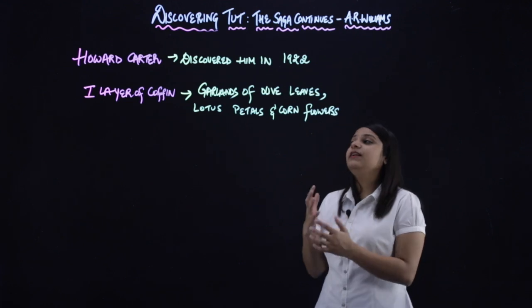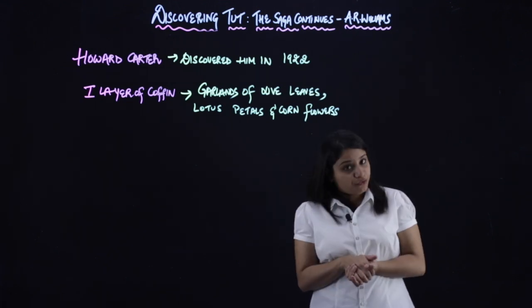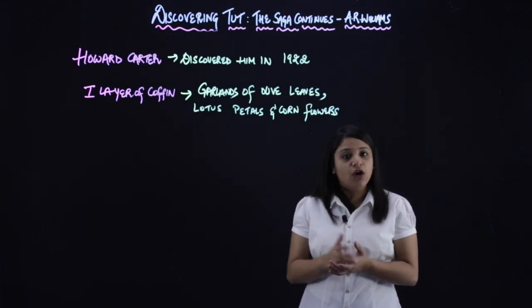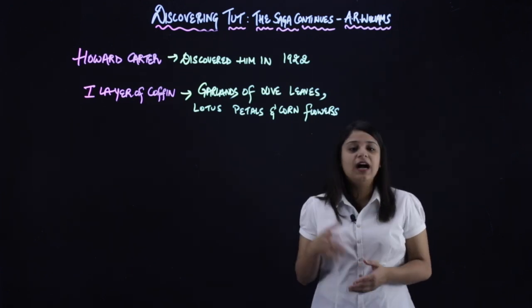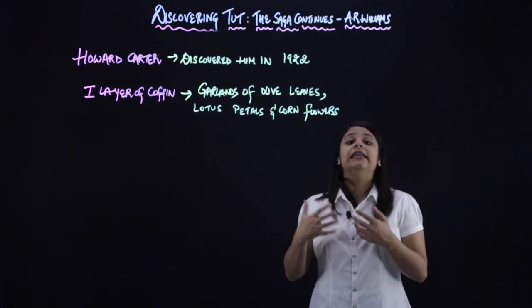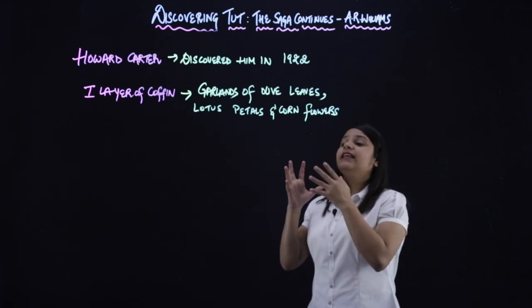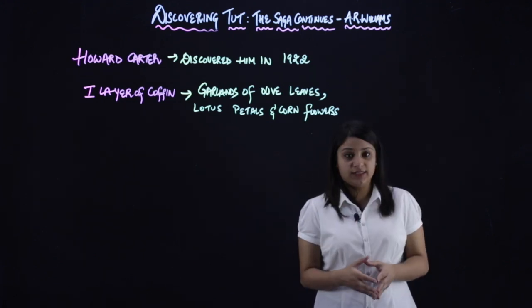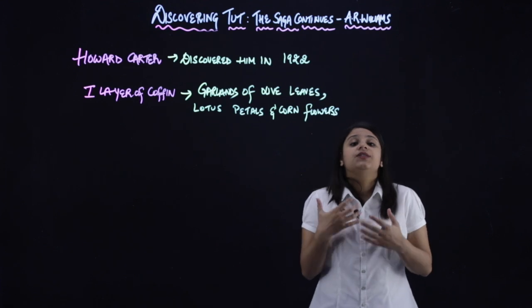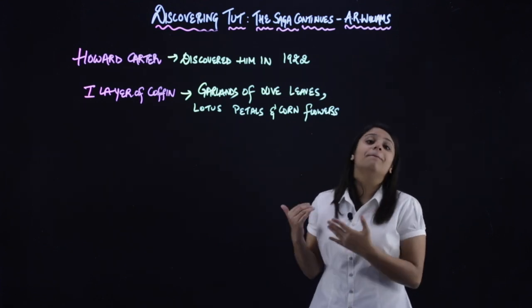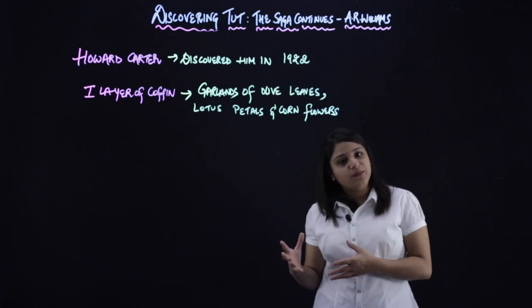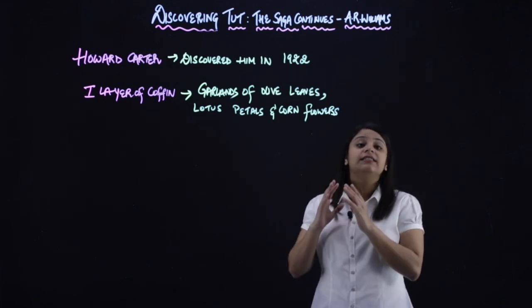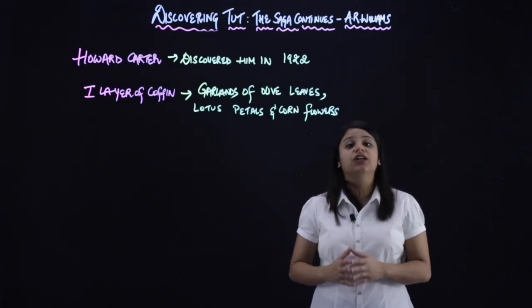So at the time he discovered, he saw that in the first layer of coffin, I should say, in the gold coffin, he found a garland of olive leaves, olive leaves garland, right? And then lotus petals and cornflowers. He found this. So you can see how respectfully they buried him. With all the riches, with all the gold, with all the precious gems, he was buried in such a majestic, in such a grand way.